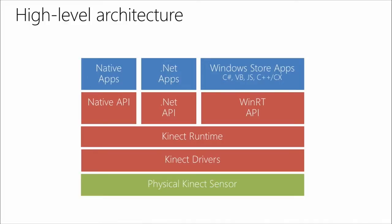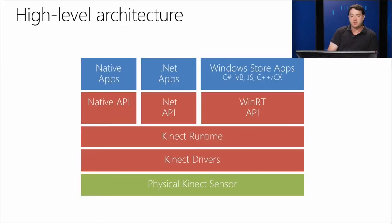All these APIs share the same design — we designed the APIs once and ported them to each language. The only differences between .NET and native APIs are the language-specific differences: collection types are slightly different, and the COM eventing pattern is used instead of .NET eventing. The Unity APIs follow the same pattern as well. Importantly, multiple apps can run and use Kinect data at the same time — that's a big new feature that was heavily requested.